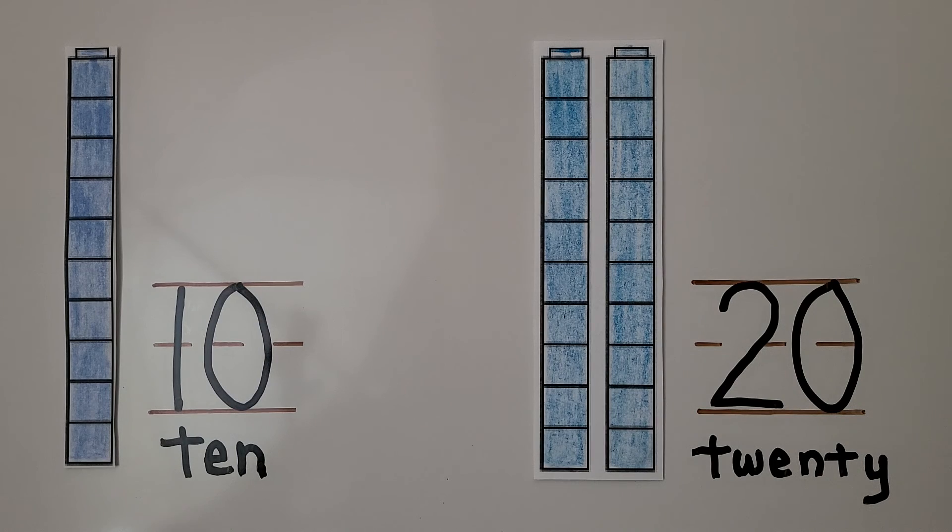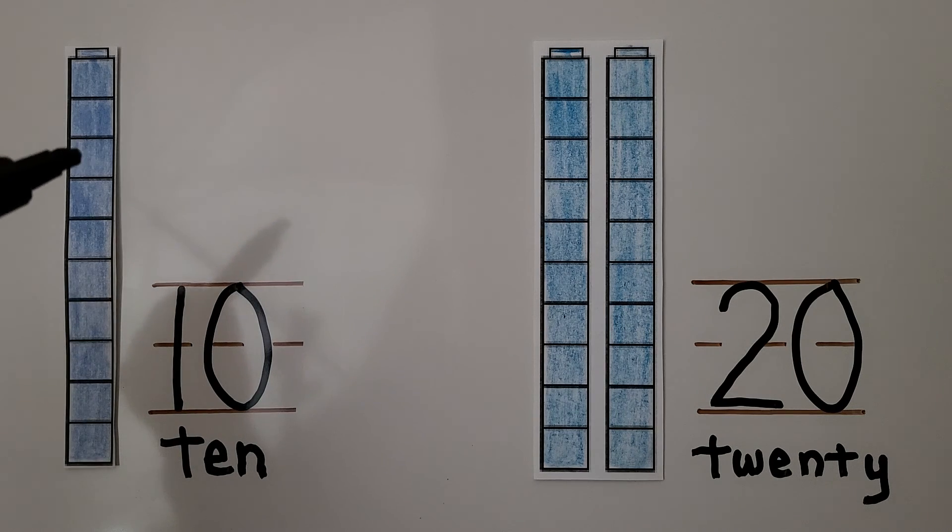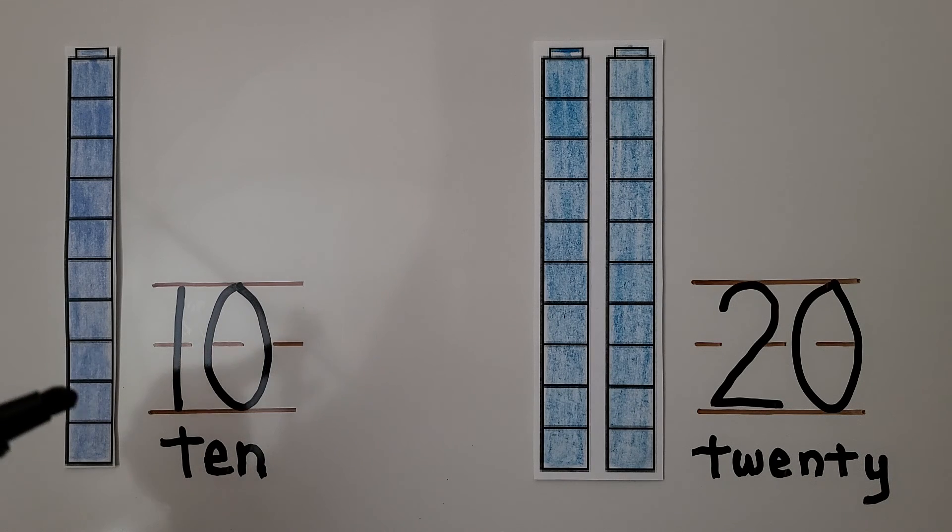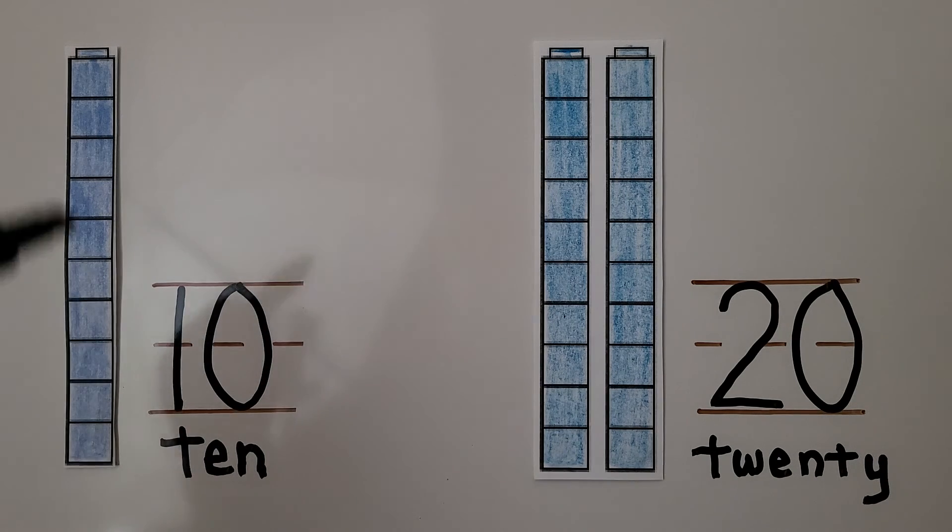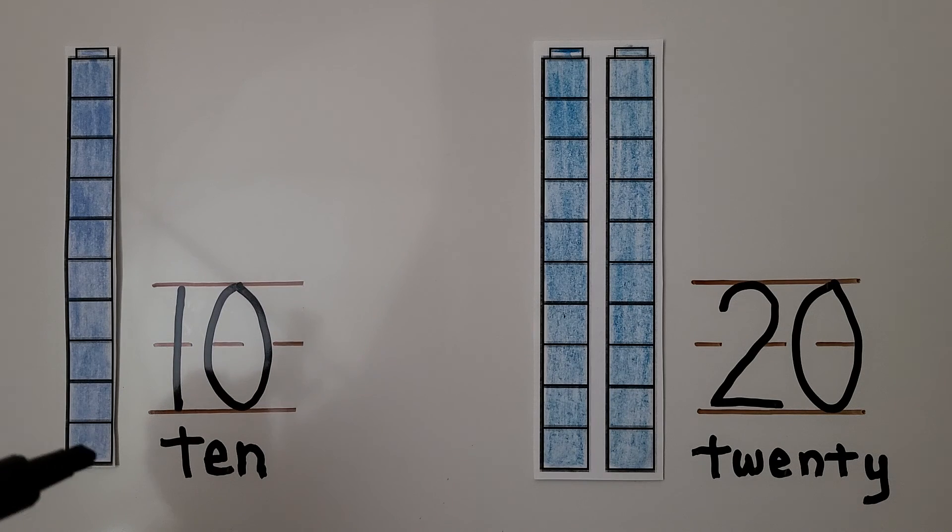Here we have one cube tower of 10 cubes. We can count them: 1, 2, 3, 4, 5, 6, 7, 8, 9, 10. So every time we see a cube tower like this of 10, we can skip count by tens.